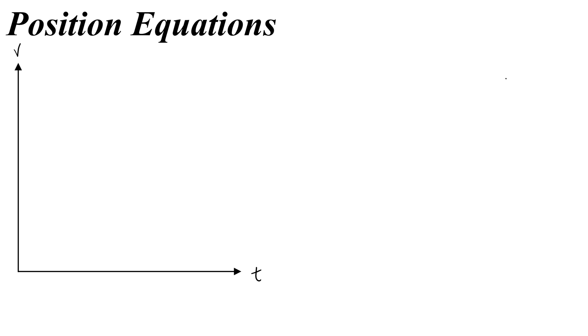So go ahead and sketch a velocity versus time graph. Then we're going to mark some initial point, v naught, and it's going to go to some final velocity that we'll just mark arbitrarily as v.